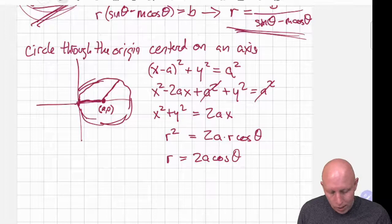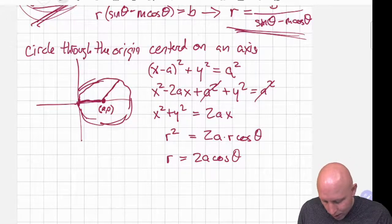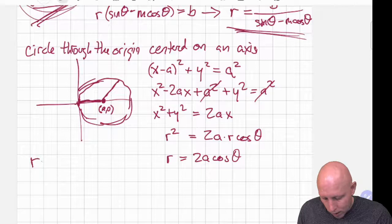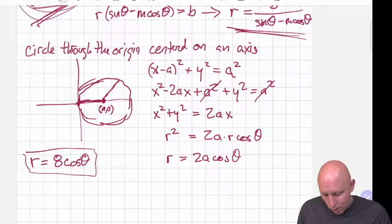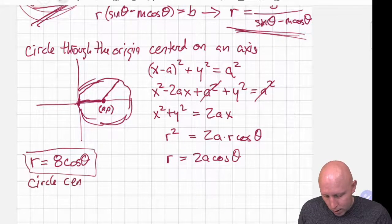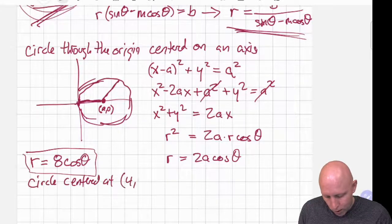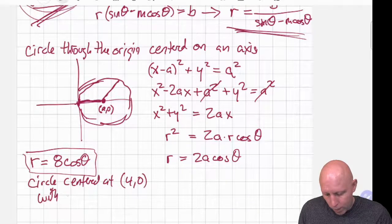So what does that mean? If we are given a polar equation that looks like r equals 8 cosine of theta, then that is a circle centered at (4, 0) with radius 4.